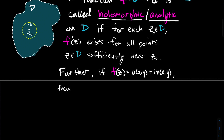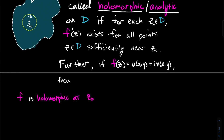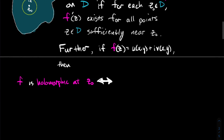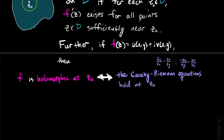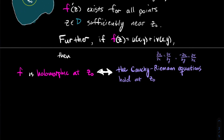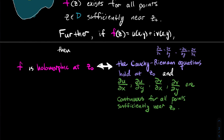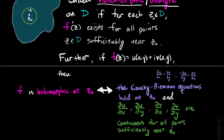Further, if F has real and imaginary parts U and V respectively — real-valued functions of two real variables — then to say that F is holomorphic at Z₀ is equivalent to the Cauchy-Riemann equations holding at Z₀: the partial of U with respect to x equals the partial of V with respect to y, and minus the partial of U with respect to y equals the partial of V with respect to x. The CR equations have to hold, and each of these first-order partial derivatives of U and V all have to be continuous sufficiently near Z₀.